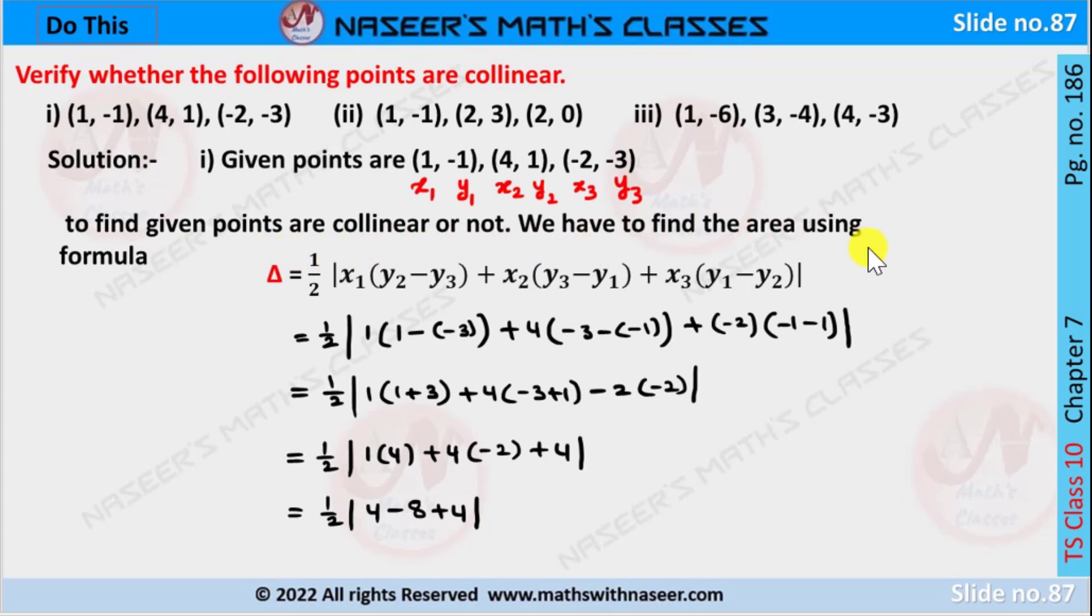Δ = ½|x₁(y₂ - y₃) + x₂(y₃ - y₁) + x₃(y₁ - y₂)|. So after substituting, we get ½|1(1 - (-3)) + 4(-3 - (-1)) + (-2)(-1 - 1)|.